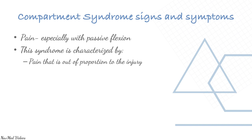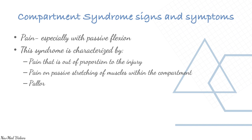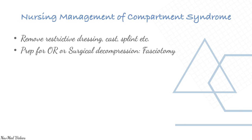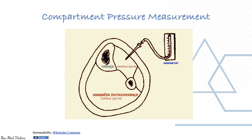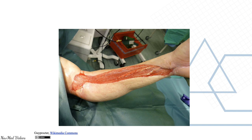Compartment syndrome is characterized by the P's: pain out of proportion, pain over passive stretching, pallor, decreased sensation, and decreased power. Management: remove restrictive dressings, prepare for operative surgical decompression (fasciotomy), and elevate the injured area. Compartment pressure measurement uses special instrumentation with a needle inserted into the myofascial compartment to note the pressure. Fasciotomy releases the compartmental fascia. This is an absolute emergency — the patient may lose the limb if not treated immediately.